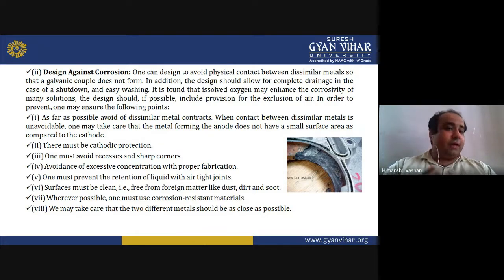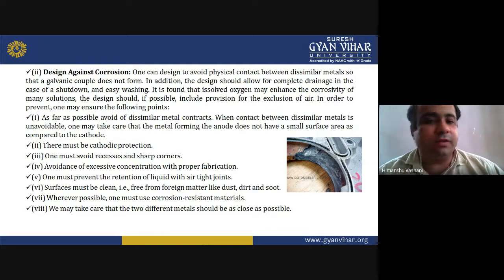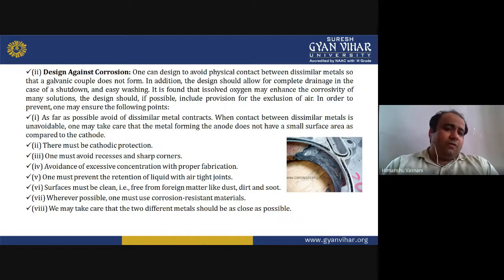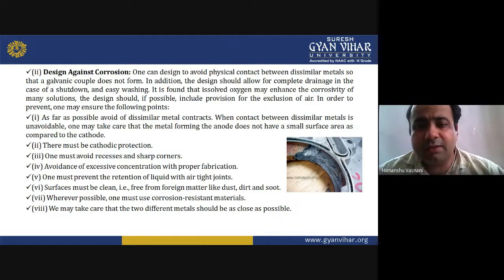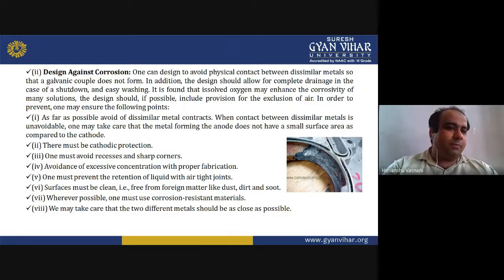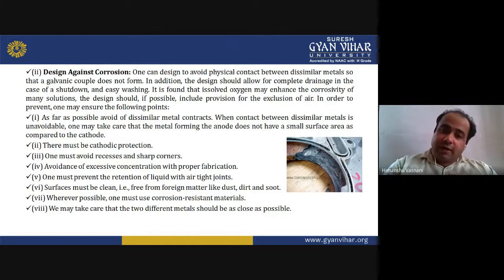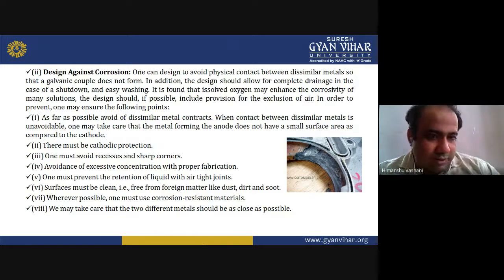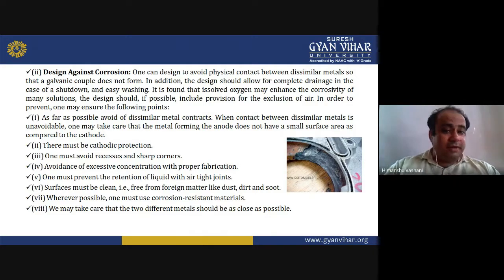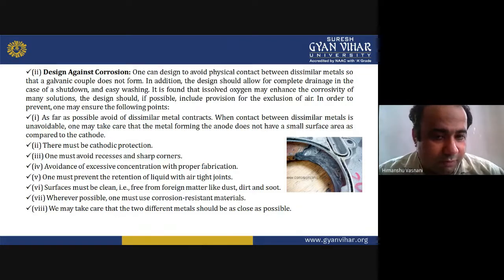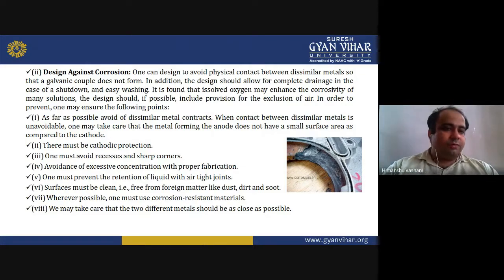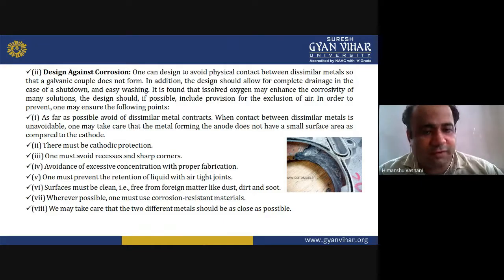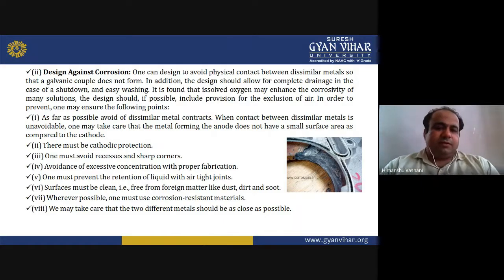As far as possible, avoid contact between dissimilar metals. When such contact is unavoidable, ensure the metal forming the anode does not have a small area compared to the cathode. Avoid recesses and sharp corners. Avoid excessive concentration with proper fabrication. Prevent the retention of liquid with airtight joints. Surfaces must be clean — free from foreign materials like dust, dirt, and soot.